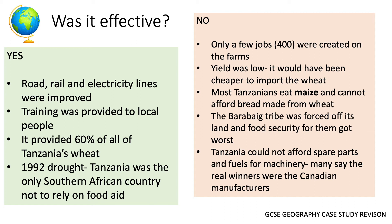On the other hand, we need to think about economic food security. Only around 400 jobs were created on farms, which is not very many relative to Tanzania's population. Yield was low and it would have been cheaper to import the wheat. Most Tanzanians actually eat maize, so they can't afford bread made from wheat. The Barabaig tribe, who lived on the Hanang plains, were forced off the land and their food security got worse — they were probably the biggest losers. Tanzania itself could not afford spare parts or fuel for machinery, and many say the real winners were the Canadian manufacturers who supplied and profited from that machinery.